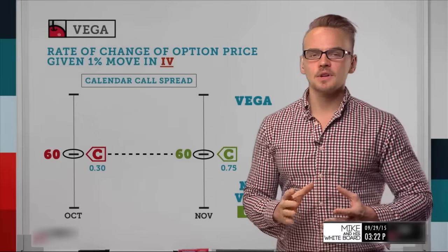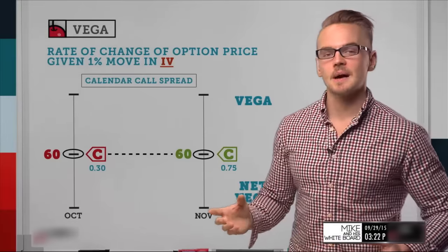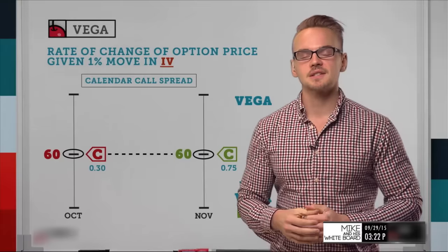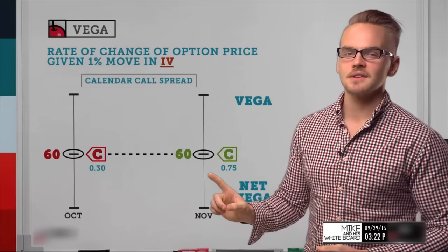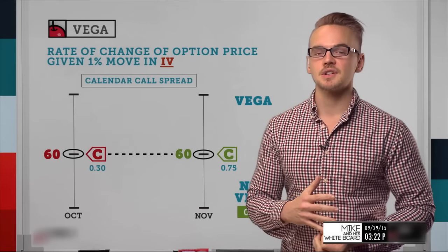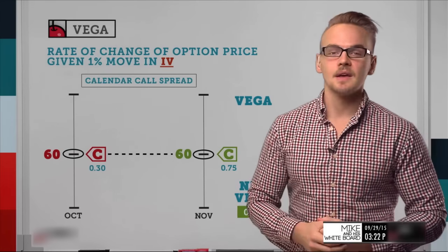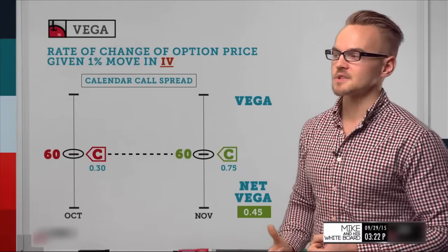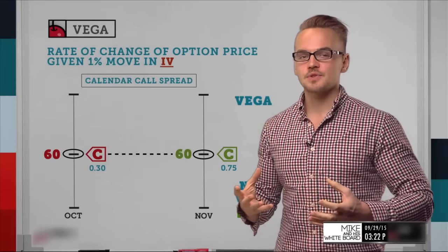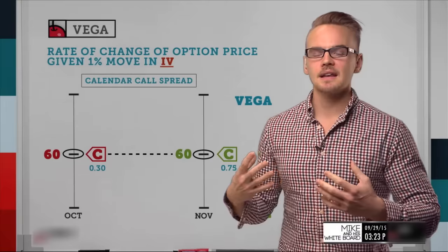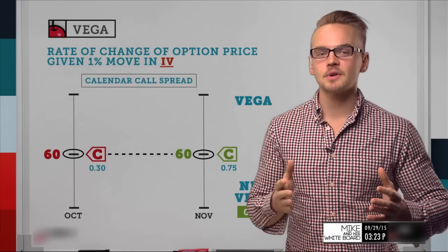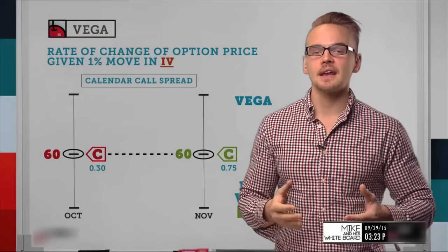With spreads, Vega is offset by the short option. With a naked option, you're much more susceptible to changes in implied volatility — buying or selling a single call with a Vega of 0.75 means a one percent move helps or hurts by 75 cents. But hedging with the short option brings the net Vega down to 45 cents, almost half. So any spread — vertical or calendar — will have a lower Vega than a naked option or naked put.